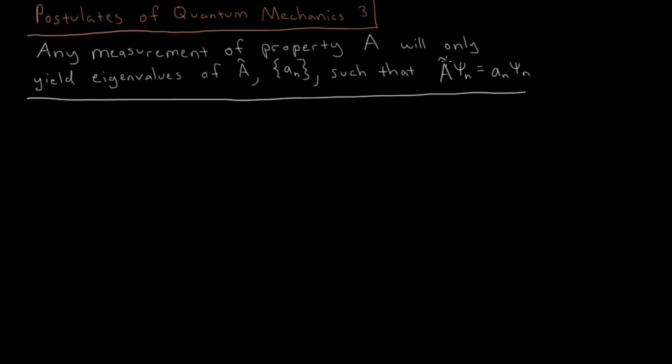The operator, the quantum mechanical operator for that physical observable acting on the wave function is going to equal some eigenvalue times the wave function again. So there's going to be a discrete set of these eigenvalues which are possible, and these are the only possible values you can observe whenever you measure a property.